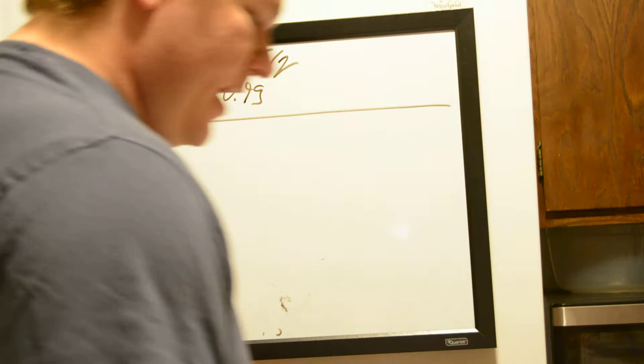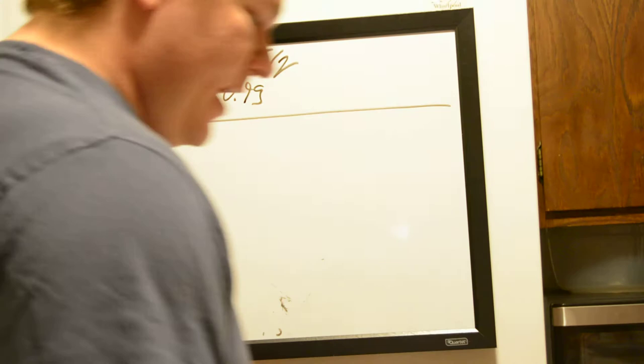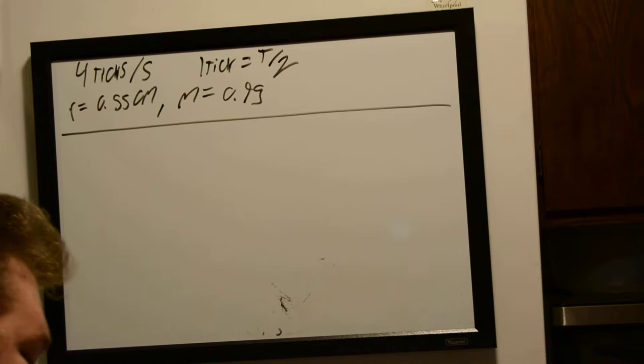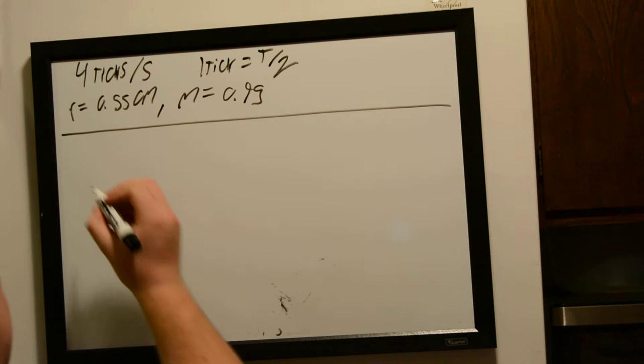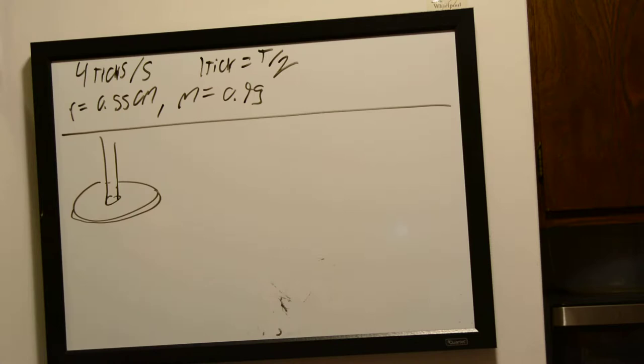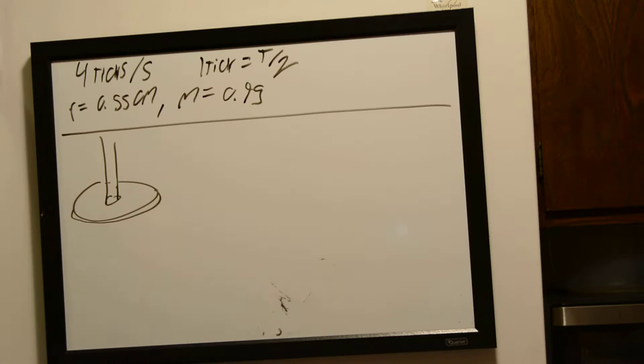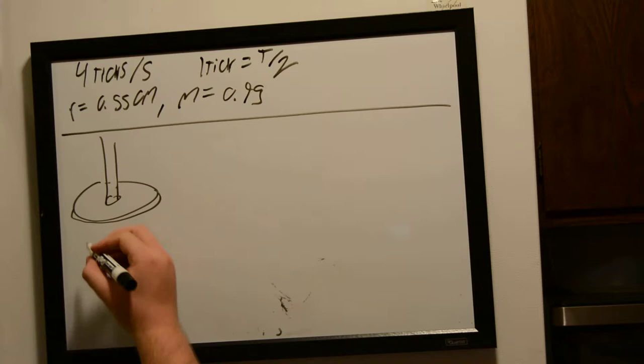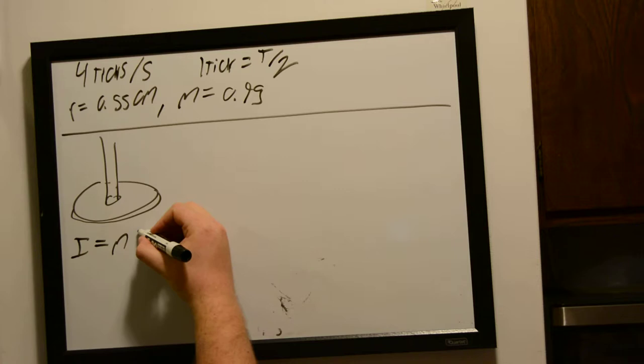So that's all of our given information, and we're asked to find the moment of inertia of our balance wheel about the shaft. So, our balance wheel is this little disc here, and right here we have our shaft. So, what we need to do is use the equation for moment of inertia of a disc, which is equal to mass and its radius squared.